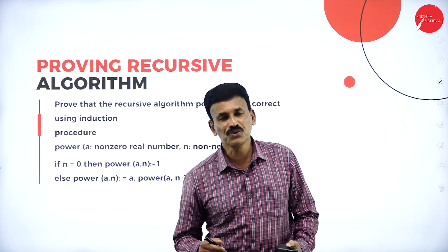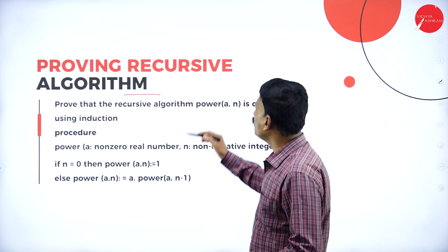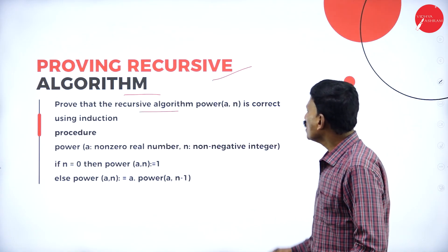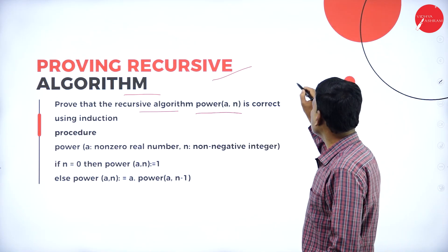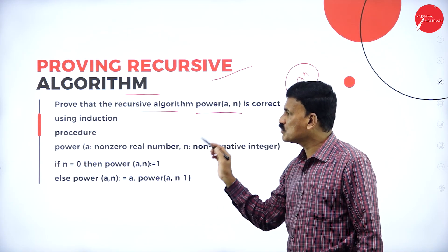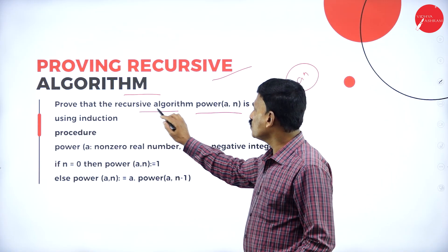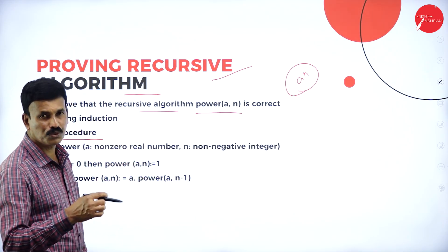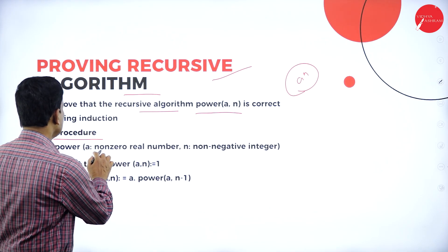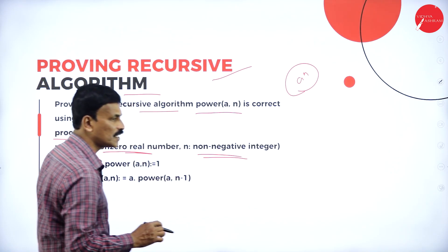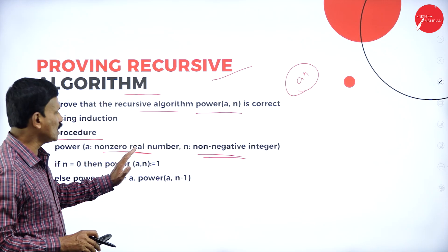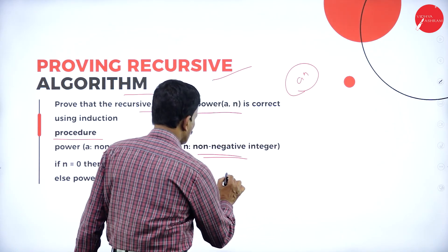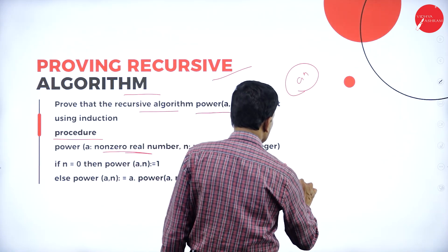Now let us come to the last concept: proving a recursive algorithm. We want to prove that the recursive algorithm power(a, n) is correct using induction. Here, a is a non-zero real number and n is a non-negative integer. power(a, n) is denoted as a to the power of n.